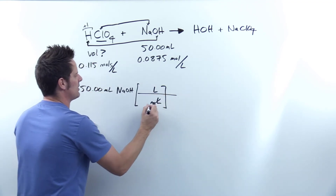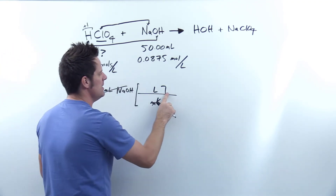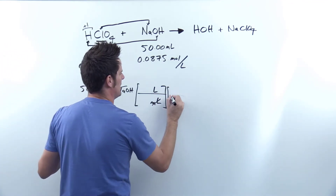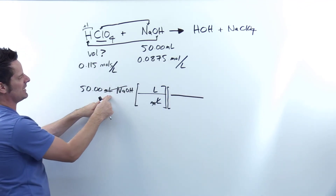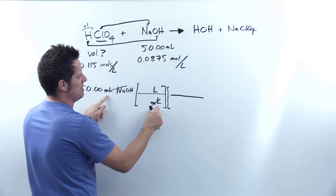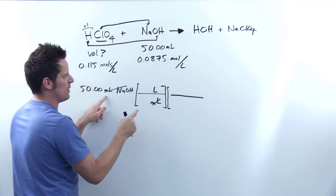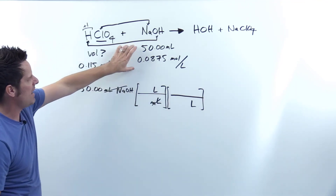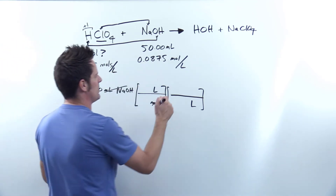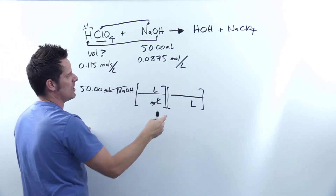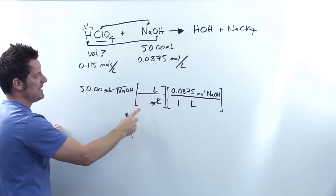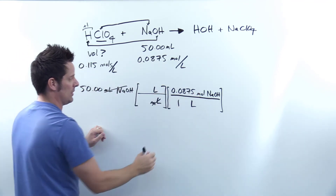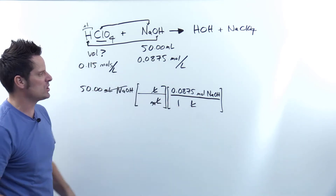My milliliters cancel each other out, giving me liters of sodium hydroxide. I then put liters of sodium hydroxide in the denominator of the next step to cancel those out, and in the numerator I write 0.0875 moles of sodium hydroxide per one liter of sodium hydroxide — because that is what molarity means. My liters cancel, and now I'm at units of moles of sodium hydroxide.